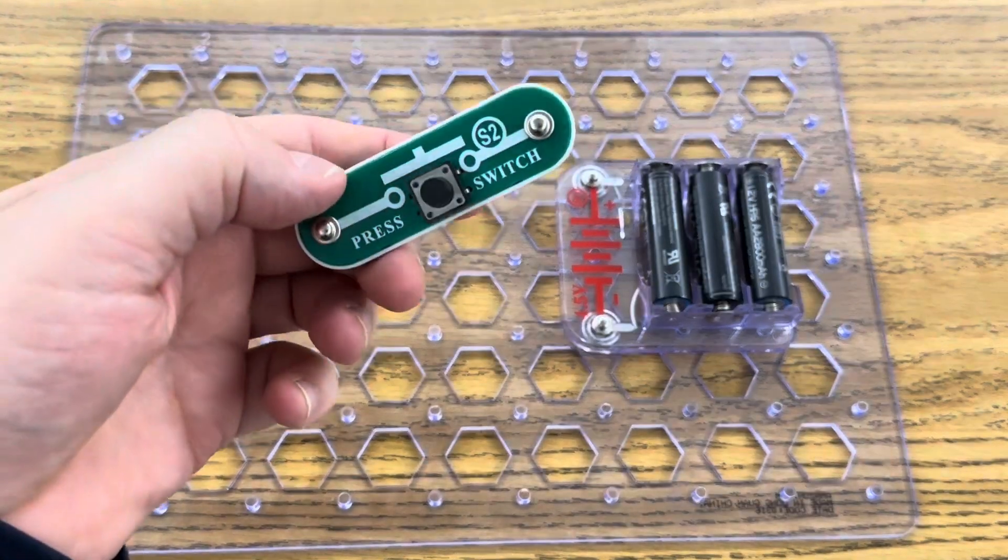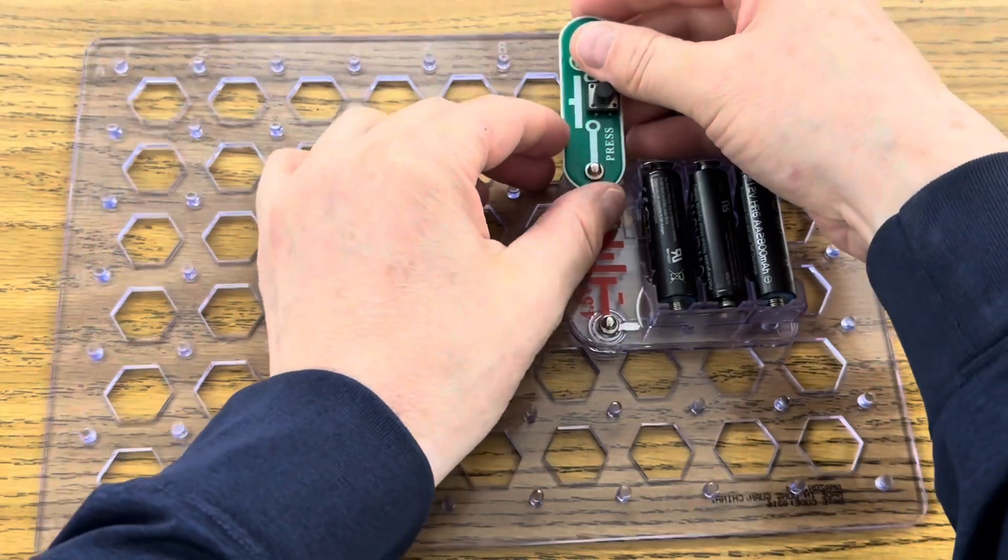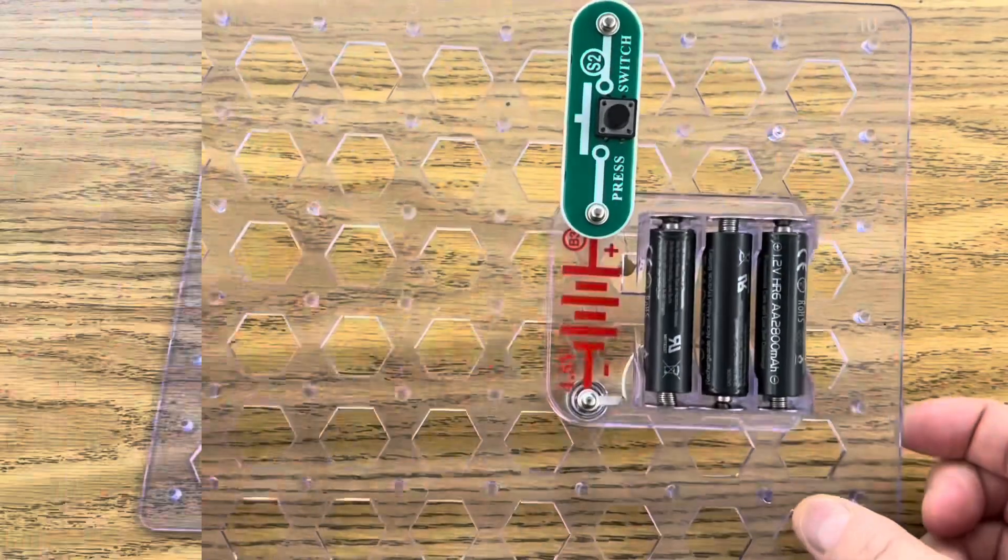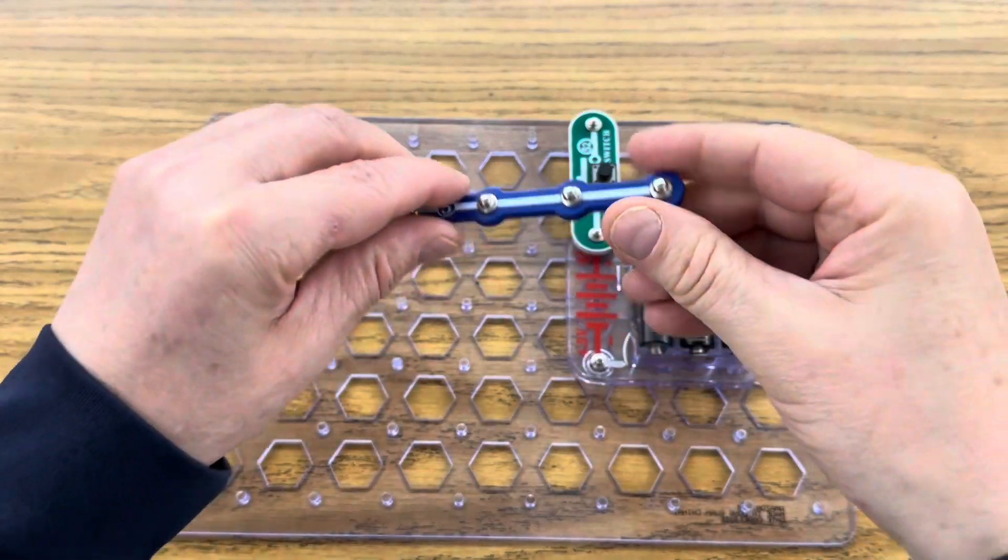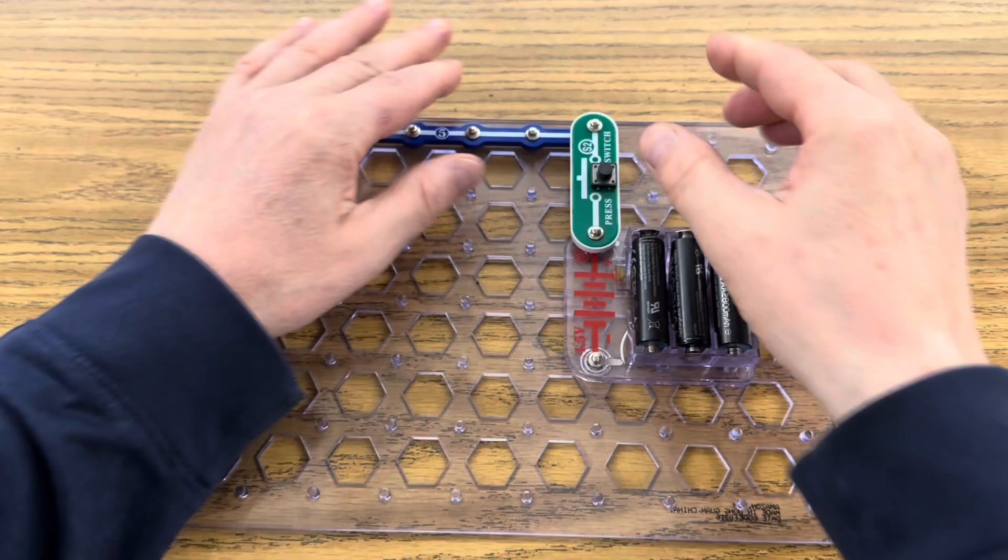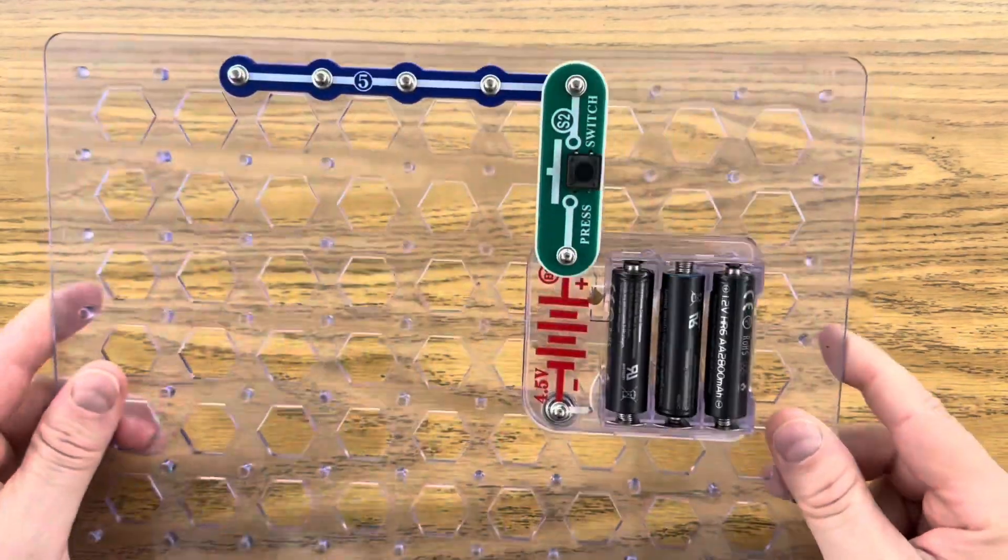Take your press switch and put it on the positive side of your battery holder so it looks like this. Then take your five snap wire and attach it to the other side of the switch so everything's connected.